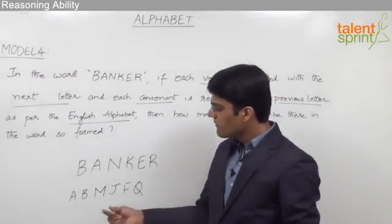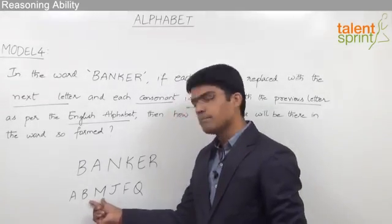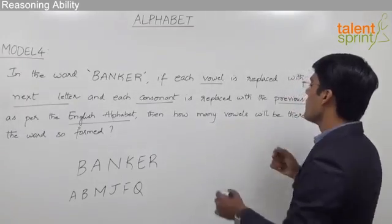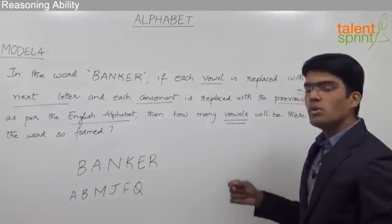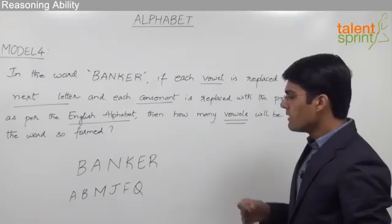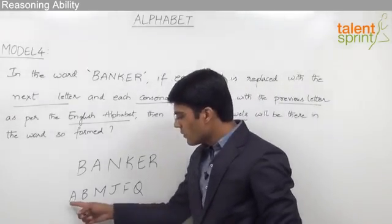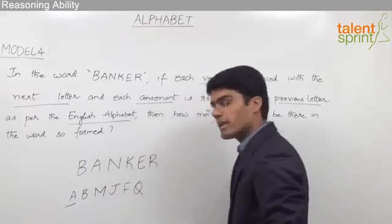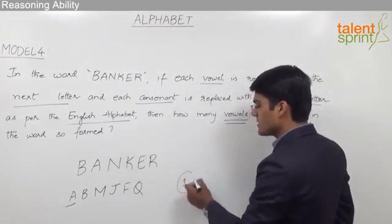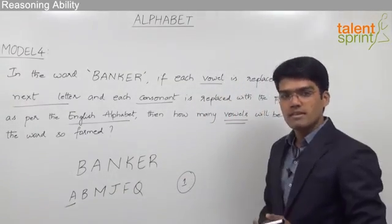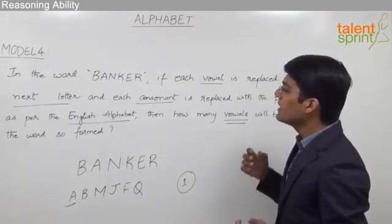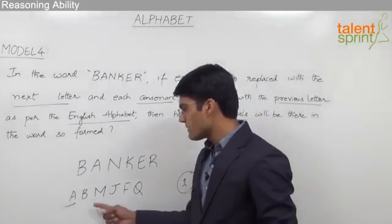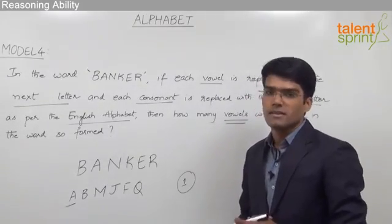So now the new word formed is A, B, M, J, F, Q. The question asks how many vowels will be there in the newly formed word. The number of vowels in the new word is only one, and that is A. So the answer for this question is one. If the question asks how many consonants will be there, then the answer would be five, as we have five consonants in the word form.